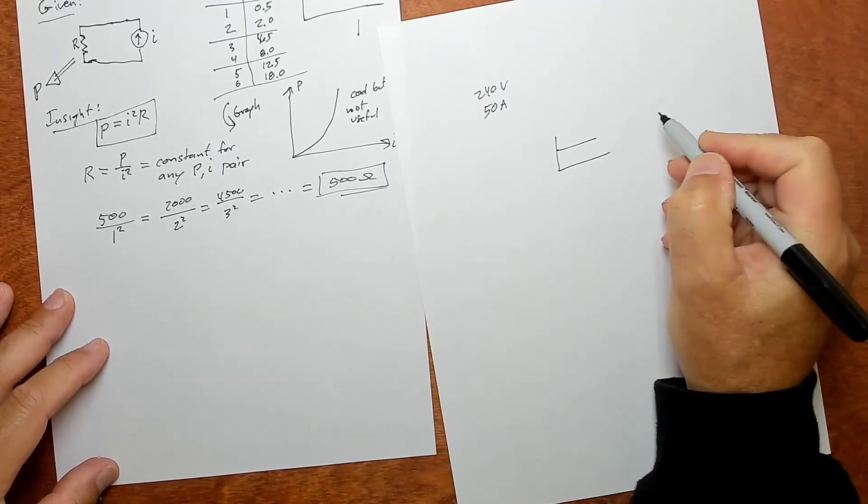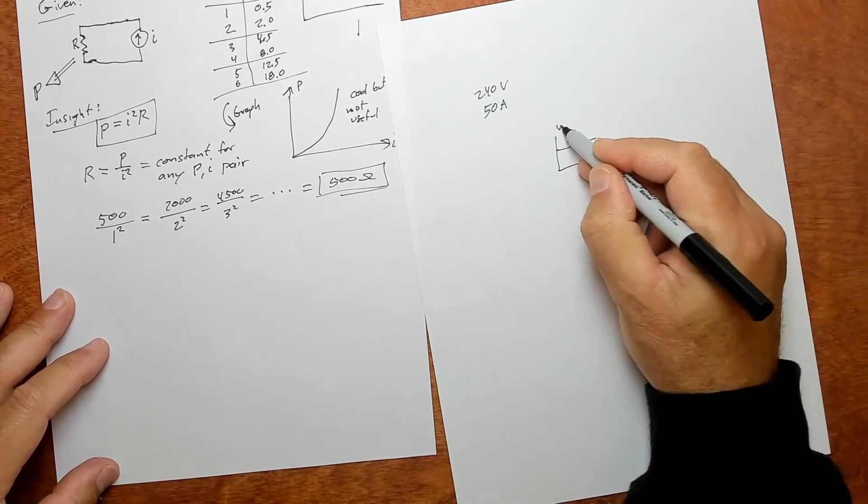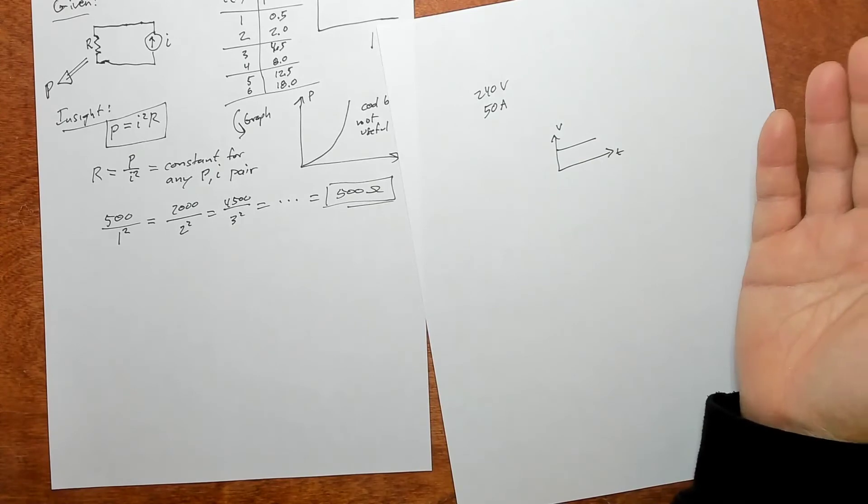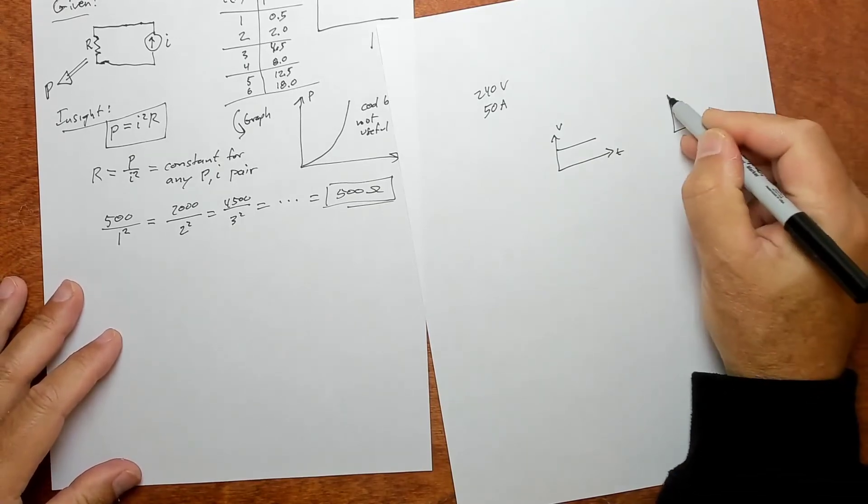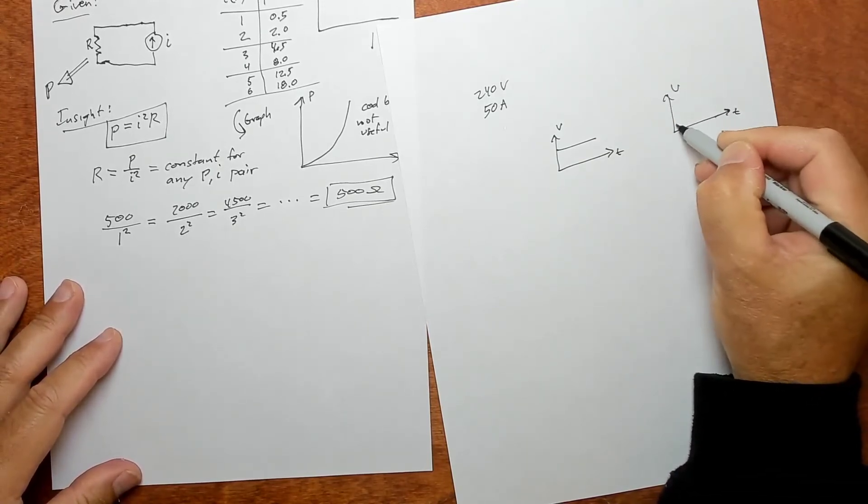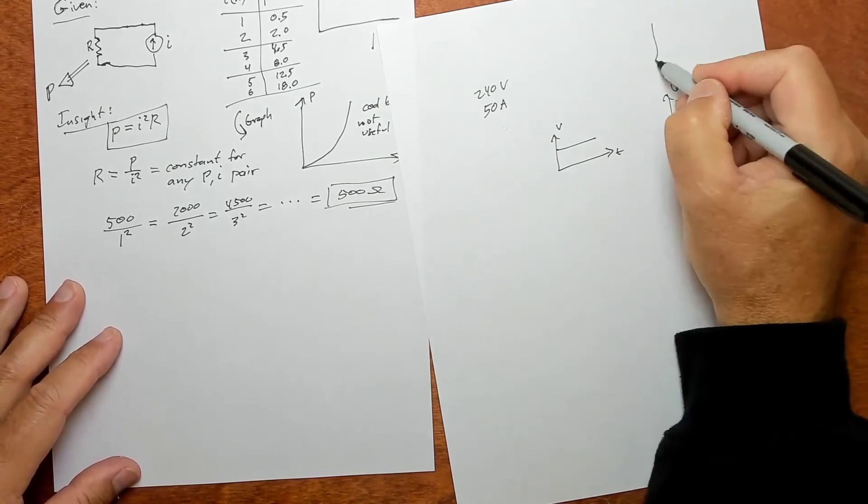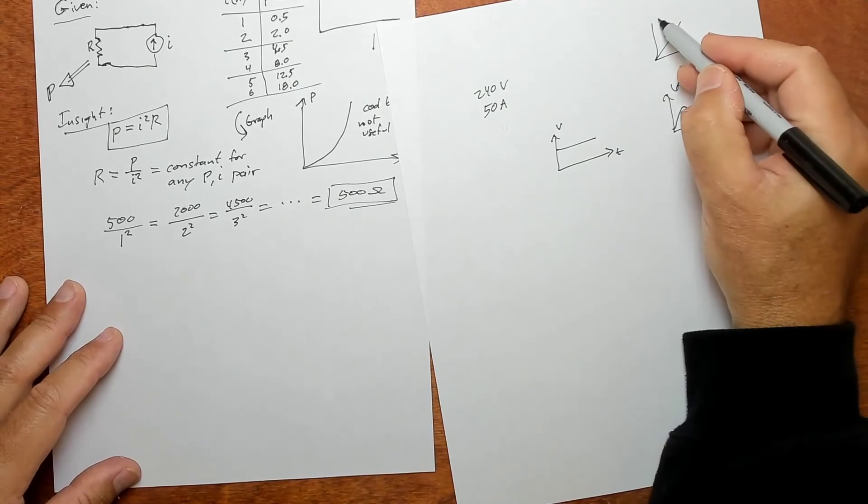But if it's doing anything other than just that, I'd like you to graph it. Like if V is doing anything else, graph it. Or if you're doing the V over I, which gives you R, graph that.